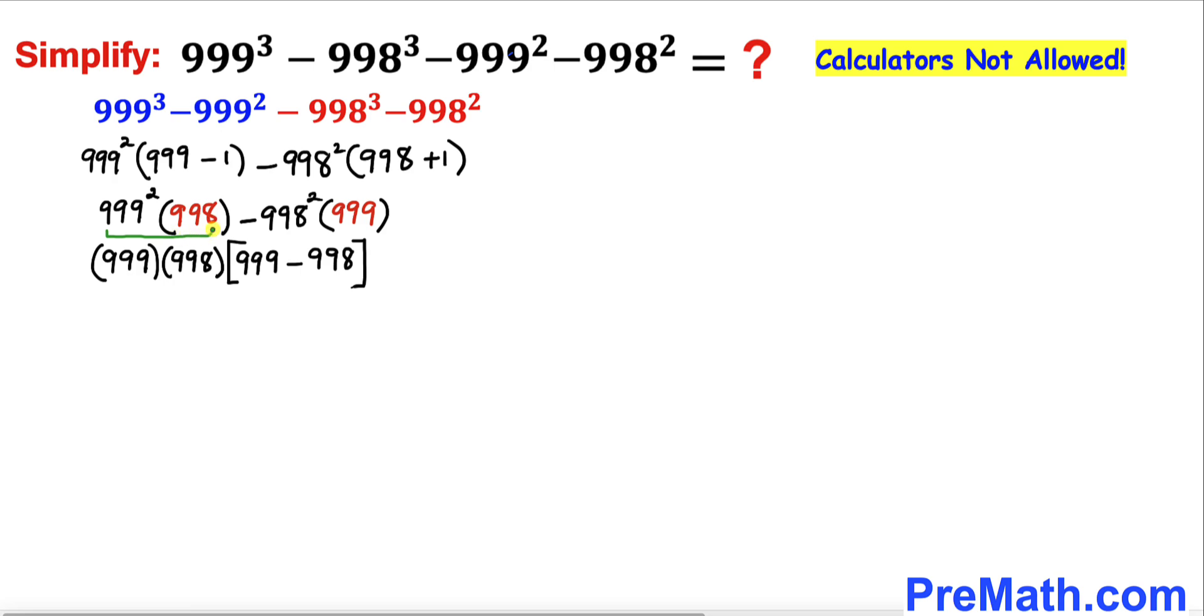In this next step we can see that 999 times 998 is in common, so I factor that one out. Inside this bracket we end up with 999 - 998.